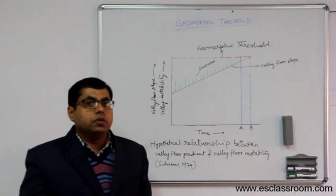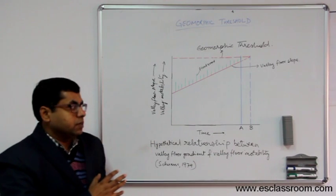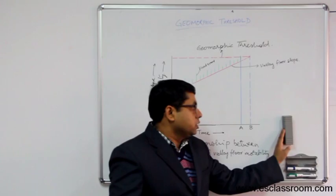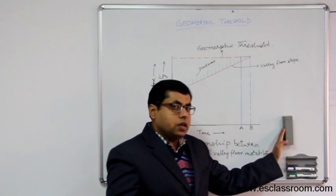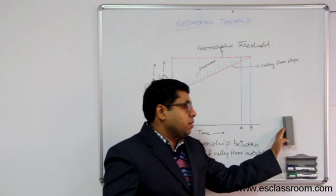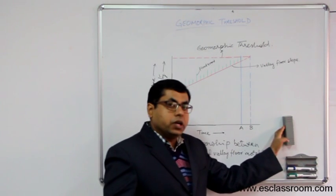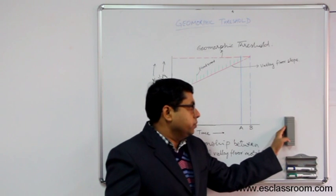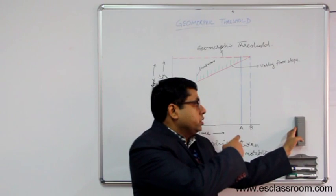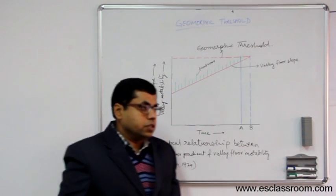A simple example could be if I want to move something, I need to apply some energy. So if I want to move this duster over here, there is a minimal energy that should be crossed so that this can be moved. Anything below that will not allow me to move this duster. So if I am pushing this, I am actually crossing that threshold so that the movement is taking place in this duster.